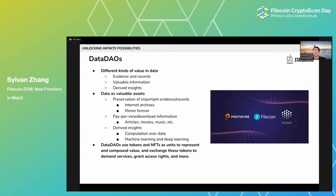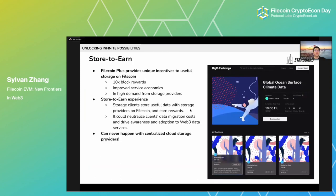An example I want to bring up is the Ocean Protocol. It's a data marketplace that leverages the storage of Filecoin. They create and use data tokens to publish and consume data services — this can be a good example for data DAO explorations or data asset marketplace explorations for FVM. Also, adding onto what was introduced about Filecoin Plus — it's a great incentive program for storage on Filecoin, giving storage providers 10x block rewards and significantly improving their service economics.